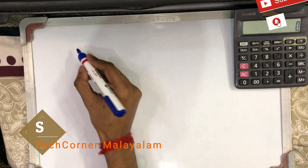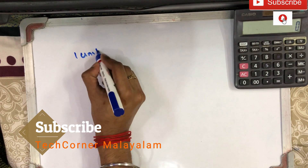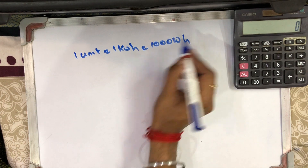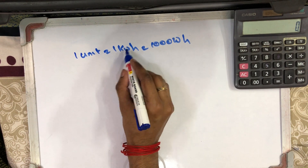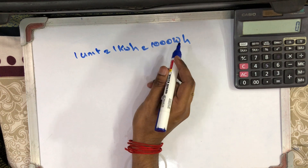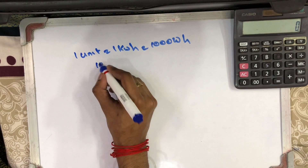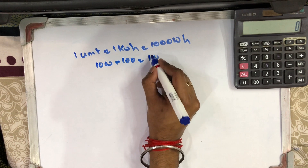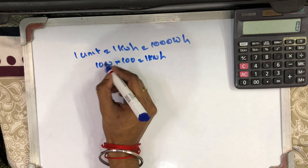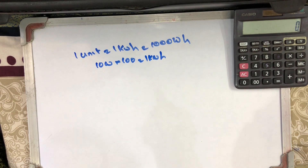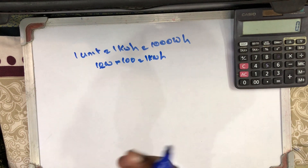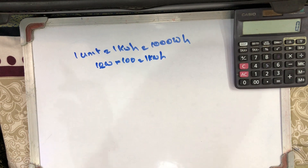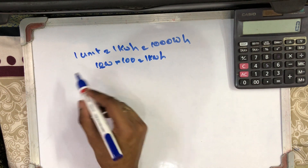The unit is a kilowatt hour. For example, 1 kilowatt hour is 1 unit. If it is 10 watt-hours times 100, that is 1 kilowatt hour — that equals 1 unit. This is the representation of power consumption.